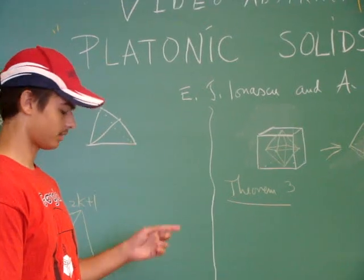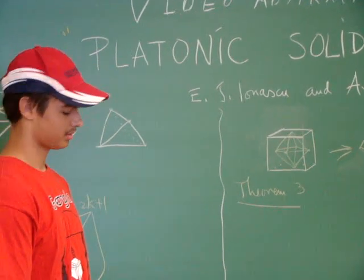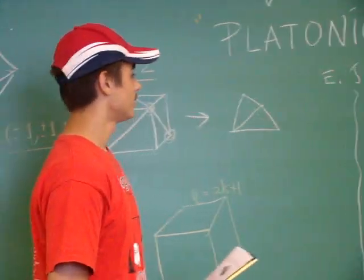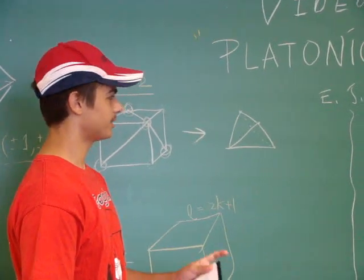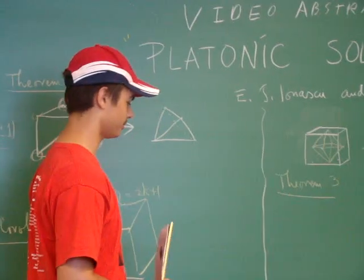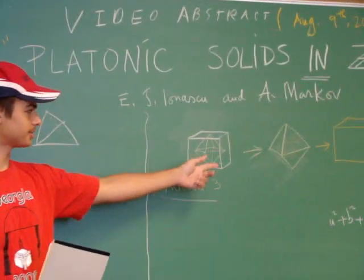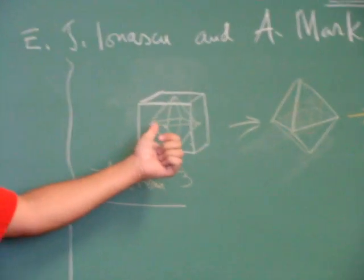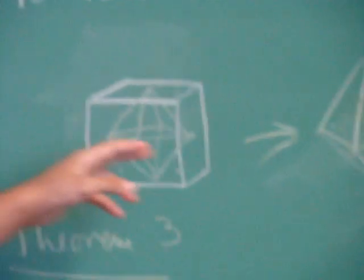So, theorem three, which is listed as 3.4 in the paper, concerns how to relate octahedrons to cubes. So, we know that there's a duality between octahedrons and cubes. Mainly, if you take the centers of the faces of a cube, you get an octahedron, and you do the same thing again, you get a cube.